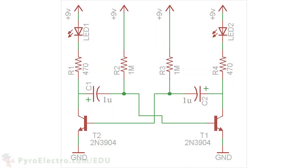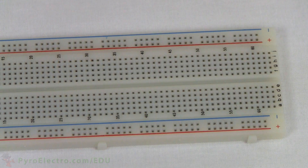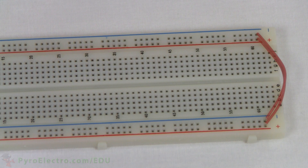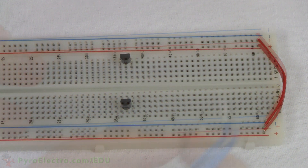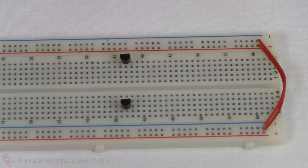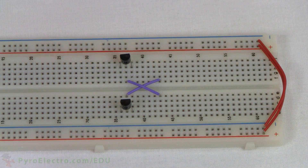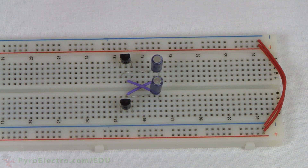This circuit is fairly complicated, so please follow the circuit diagram on the screen if the video moves too quickly. First, the breadboard power and ground bus lines are connected to both sides of the breadboard. Next, the two 2N3904 NPN transistors are added to the breadboard. Two wires are connected to the base pin of each transistor.